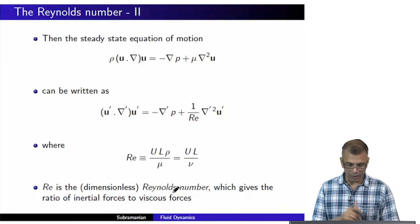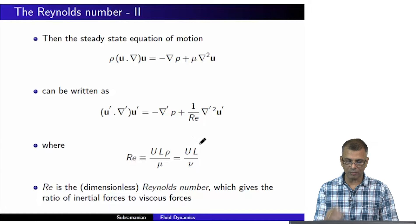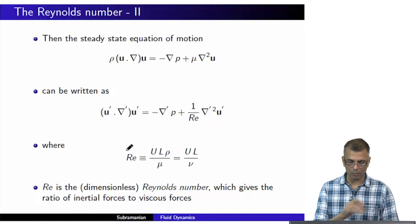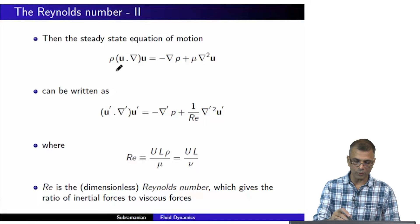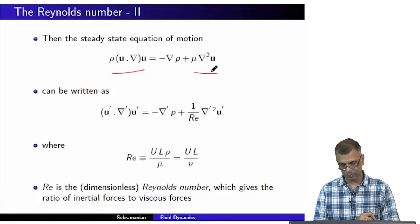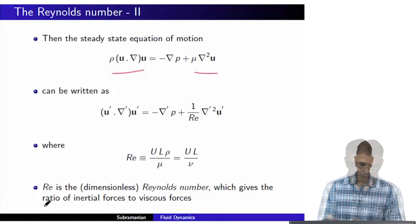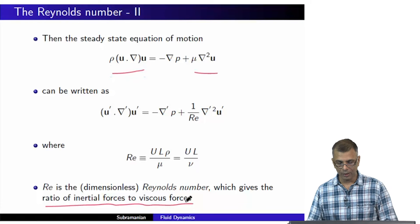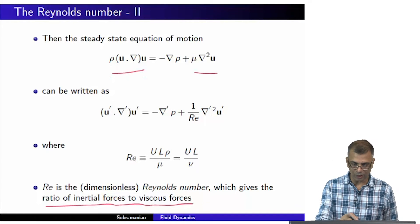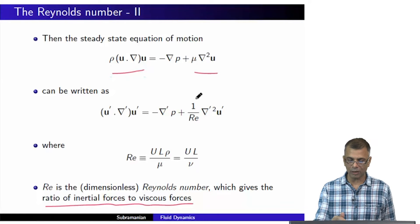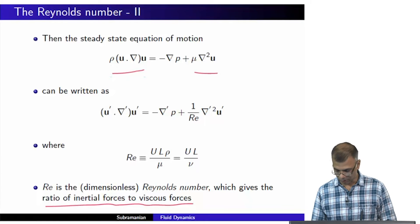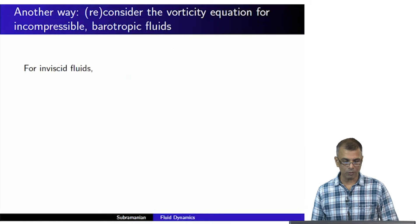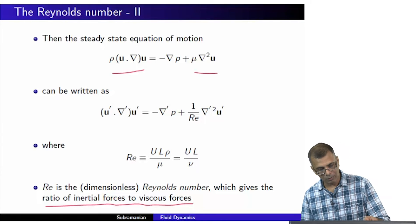The Reynolds number Re is dimensionless. You can verify that nu has dimensions of centimeter squared per second, and therefore Re is dimensionless. As we discussed last time, the Reynolds number gives the ratio of the inertial force to the viscous forces. Two ways of looking at the same thing — both are important to understand. This version of the non-dimensionalized Navier-Stokes equation will lead naturally to an understanding of the concept of dynamic similarity.